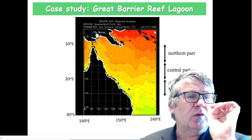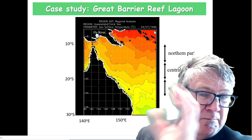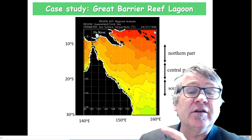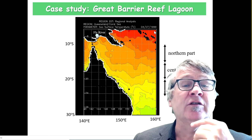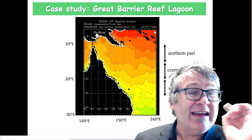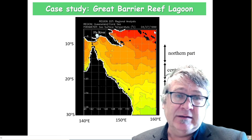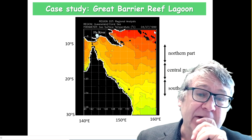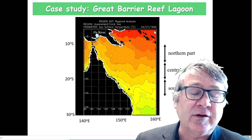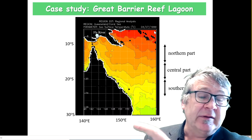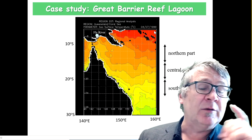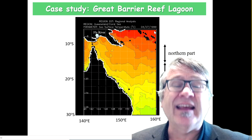What you need to keep in mind — or just write down — is the extent of geographical latitudes and longitudes, because you need to enter some data onto the online interactive display. The longitude ranges from 140 east to 160 east, and we're going from 30 south to about 10 south.